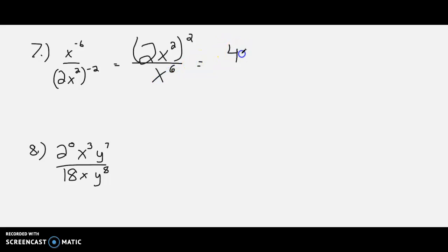Square the numerator, 4x to the 4th, still over x to the 6th. And you could turn this to 4x to the negative 2 if you want to do that. You can have 4 minus 6. However, it's going to be 4 over x squared.